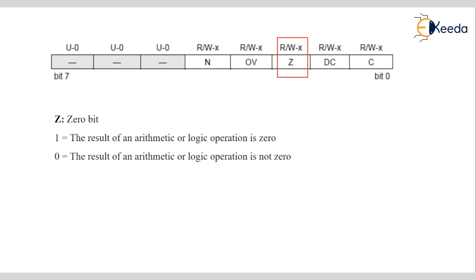In a logical operation, when you perform AND of 0 and 1 the answer is 0, so the Zero flag will be set — cleared, meaning 0. If you perform OR of 1 with 1, the result is 1, so the Zero flag will be 0. If you OR 0 with 0, then the Zero flag will be 1.